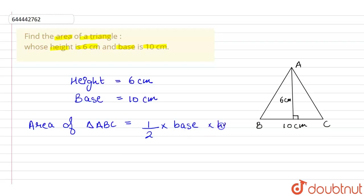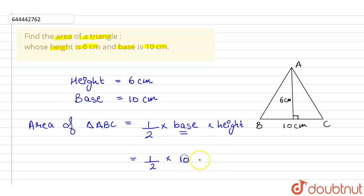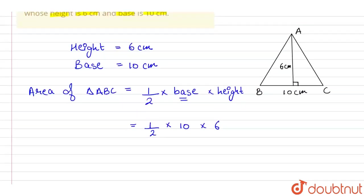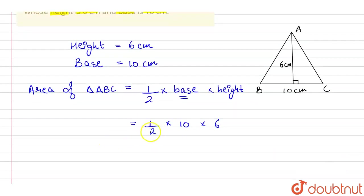This is the area formula: half multiplied by base multiplied by height. Putting in the values, the area equals half into 10 centimeters into 6 centimeters. Simplifying: 10 divided by 2 gives 5, and 5 multiplied by 6 gives 30.